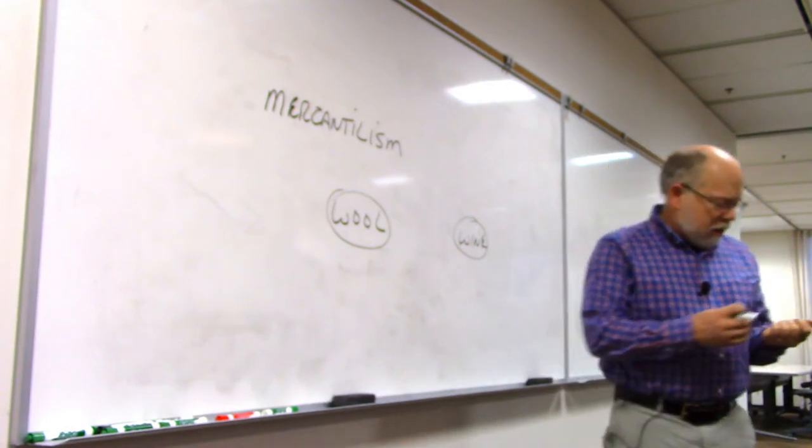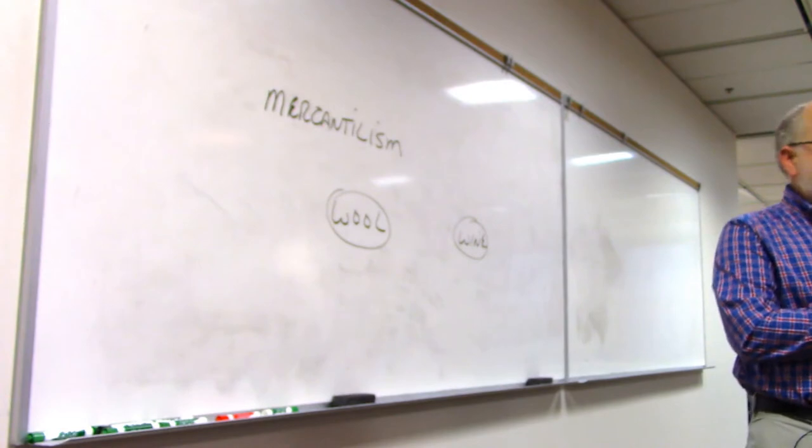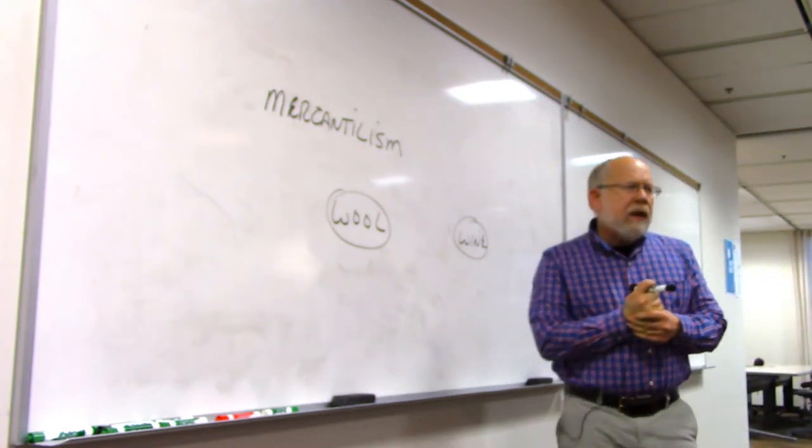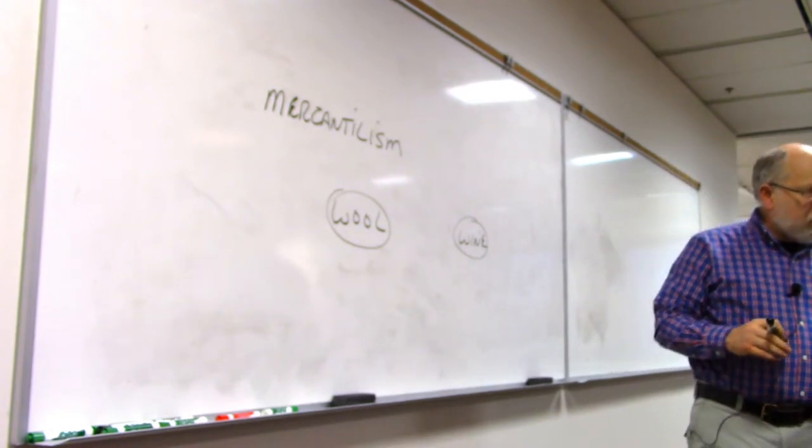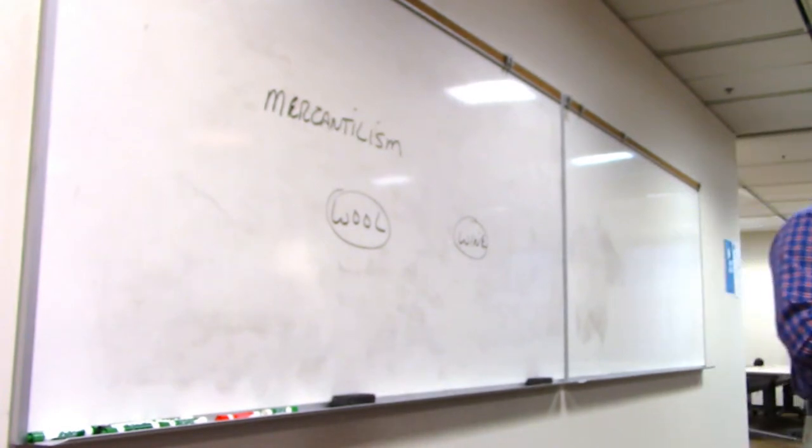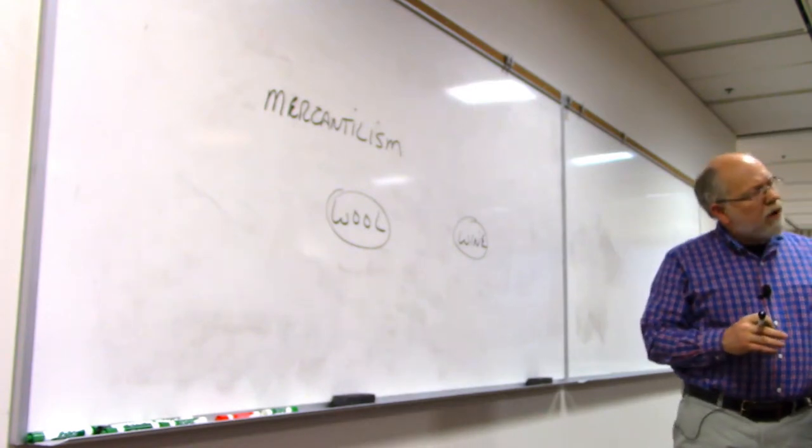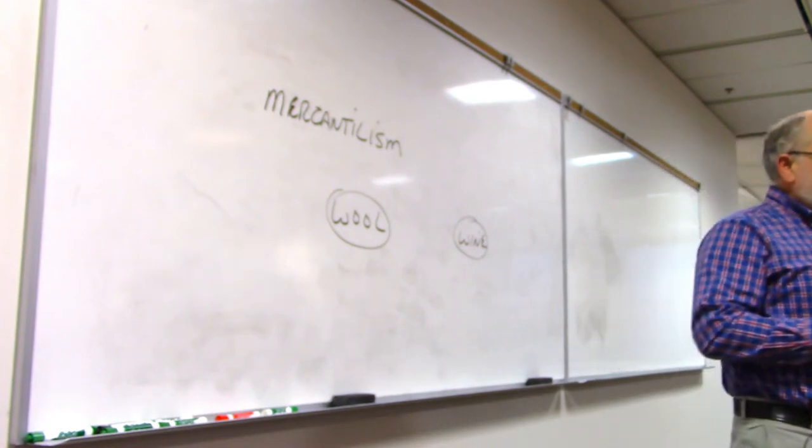We're up to the point where we're going to talk a little bit more about Adam Smith, who we said was the first academic economist. And he wrote this book called An Inquiry into the Nature and Causes of the Wealth of Nations. If you want a good book to help you get over your insomnia, that book might work fairly well for you, unless you're very interested in it. But at the time, it was a very controversial book.